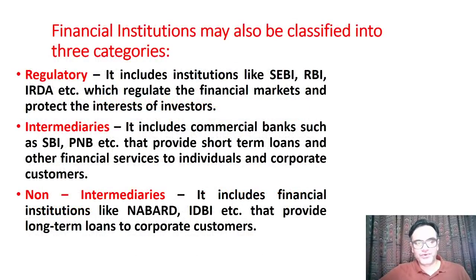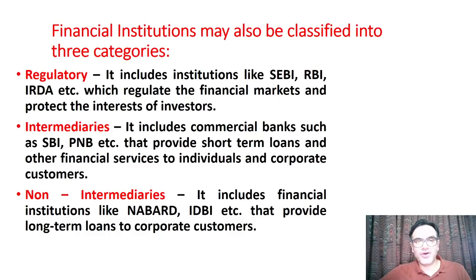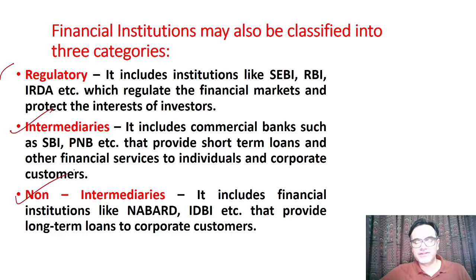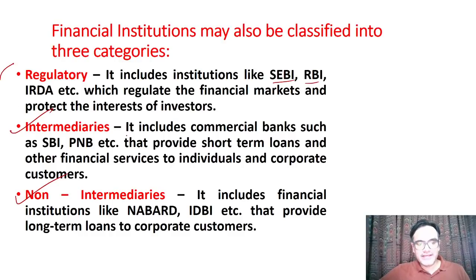Financial institutions may also be classified into three categories: regulatory, intermediaries, and non-intermediaries. Regulatory institutions include SEBI for capital market, RBI for money market and banking sector, IRDA for insurance, and PFRDA for pensions. Intermediaries include commercial banks such as SBI and PNB. Non-intermediaries include financial institutions like NABARD and IDBI.